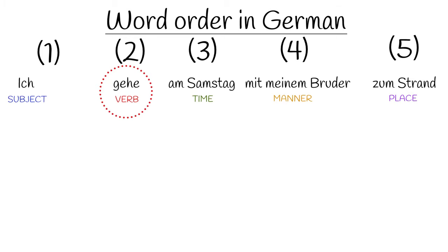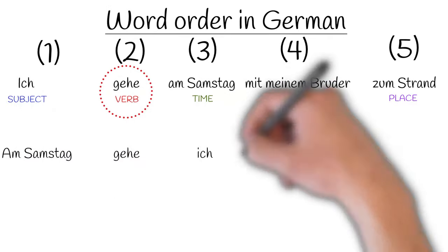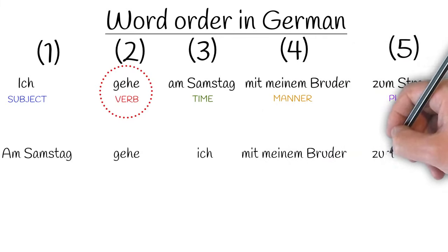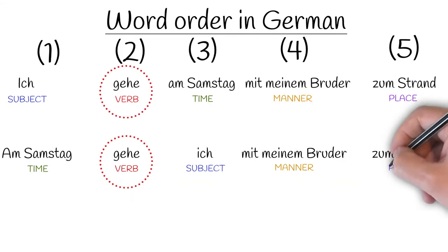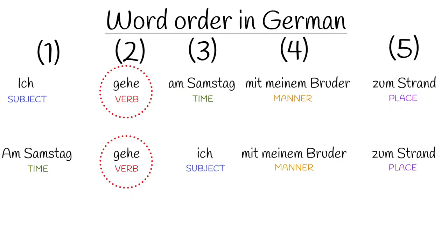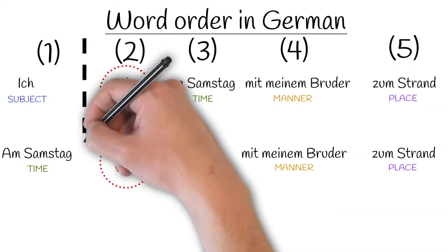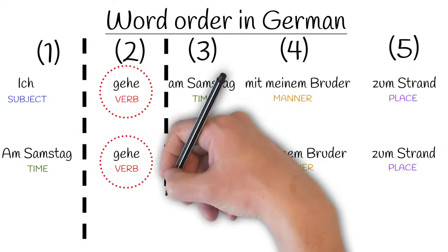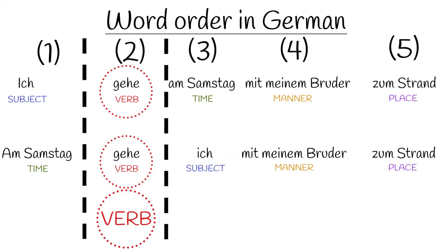Like in English, we could move the time phrase to the beginning of the sentence, but notice what is different to the English sentence if we do that: 'Am Samstag gehe ich mit meinem Bruder zum Strand.' What you should notice is that the verb must remain in the second position. Yes, 'am Samstag' comprises two words, but it's one phrase, and so 'gehe' is still in the second position, and 'ich,' the subject, must come after the verb. This is a very important and inflexible rule in German which you must learn: the first verb of the sentence comes in the second position.